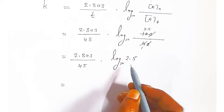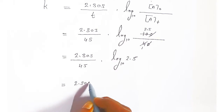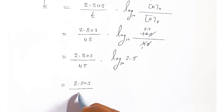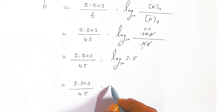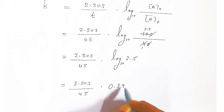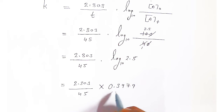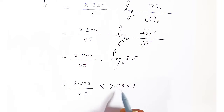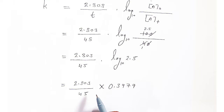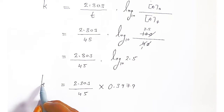To complete the calculation of K, apply log on both sides. Log K equals log 2.303 plus log 0.3979 minus log 45. Using the log table: for 2.303, the characteristic is 0 (one digit before decimal, so 1−1=0), and from the table column 23, adding mean difference, you get 3623.